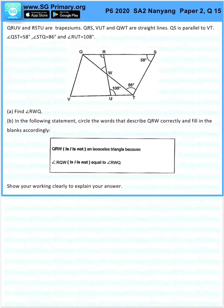Let's find UTW first, which is this portion here. We can do so by taking 180 minus 58 minus 86 because these two angles add up to 180, which is 36 degrees. So this is 36 degrees.